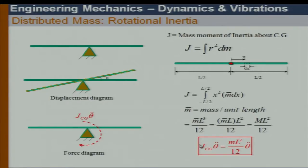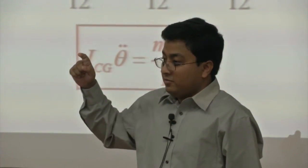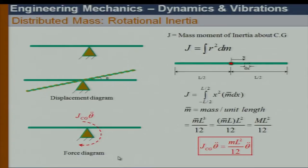When applying D'Alembert's principle, the rotational inertia force about the CG is J_CG times theta double dot, and it opposes the motion of the body. The mass moment of inertia — the rotational inertia about its own centroid — equals M·L²/12 for a bar of length L with total mass M.